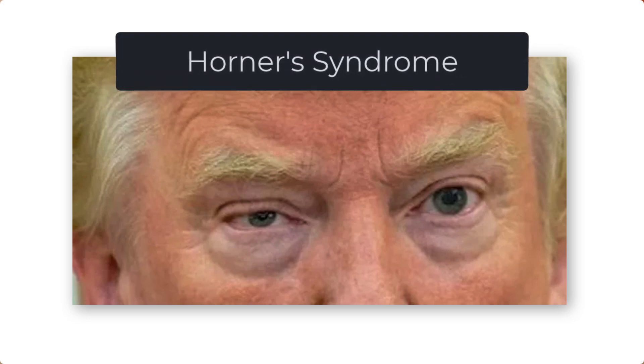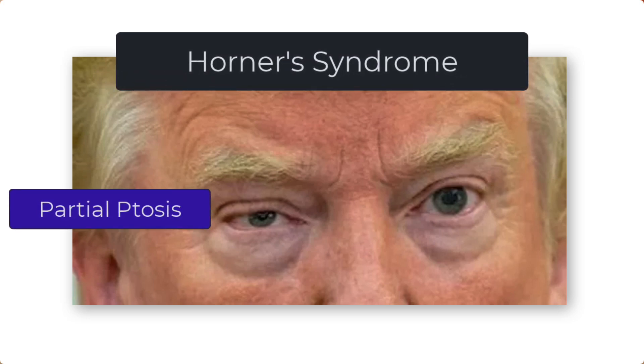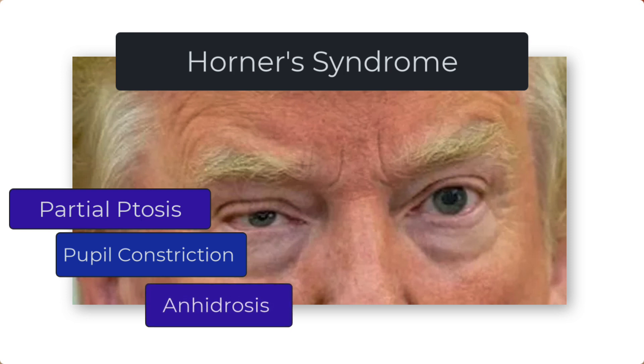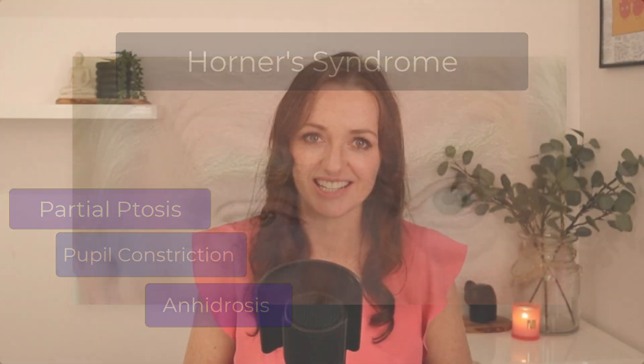I'm in the business of making things very straightforward and memorable, and I think I've found a way to do this for Horner's syndrome using this picture of Donald Trump. So this is Horner's syndrome. We've got partial ptosis or eyelid droop, a constricted pupil also known as miosis, and if we were allowed to touch Donald Trump's face, we may or may not find anhidrosis — a lack of sweating on that side.